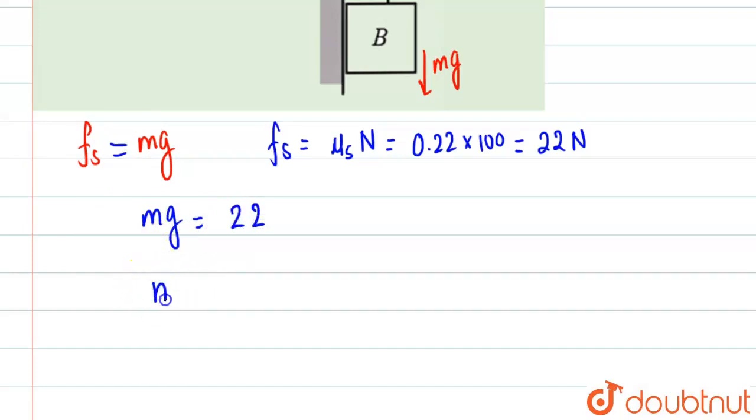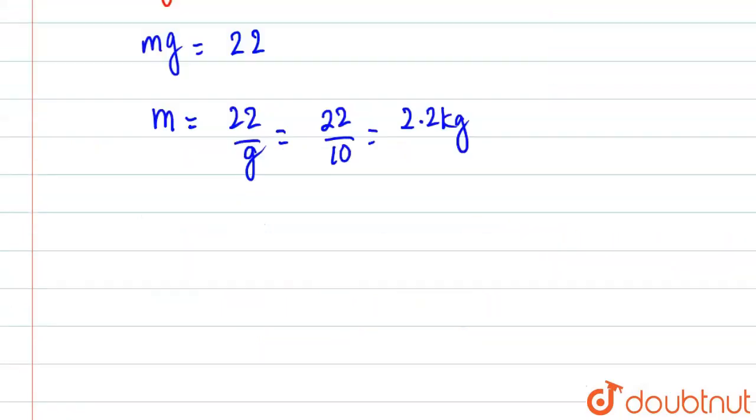We need to find m, so m will be equal to 22 by g, which will be equal to 22 by 10, hence 2.2 kilograms. So you can see that the minimum value that m must be...